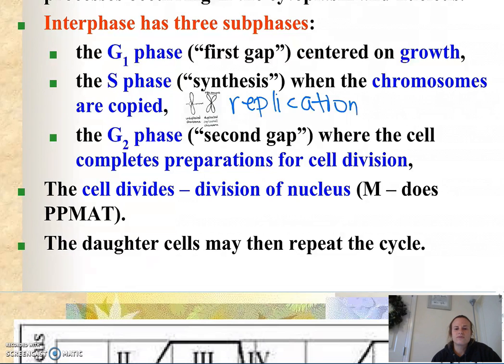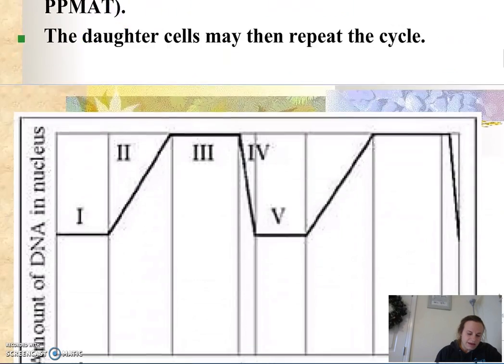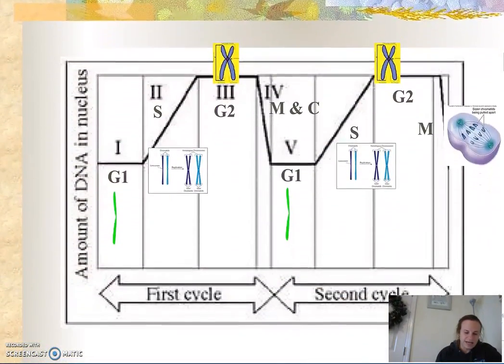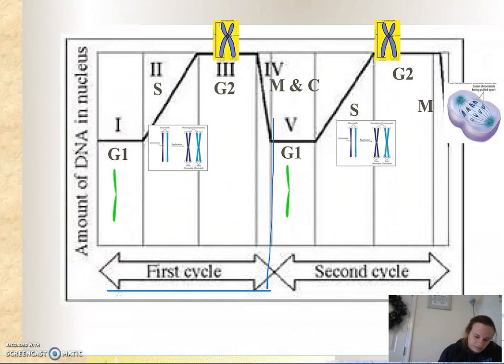Then the cell divides, and then there is division of the nucleus. If we were to look at the amount of DNA that's present during the cell cycle, this represents our first cycle. Stage one would be gap one, stage two would be synthesis, stage three would be gap two.